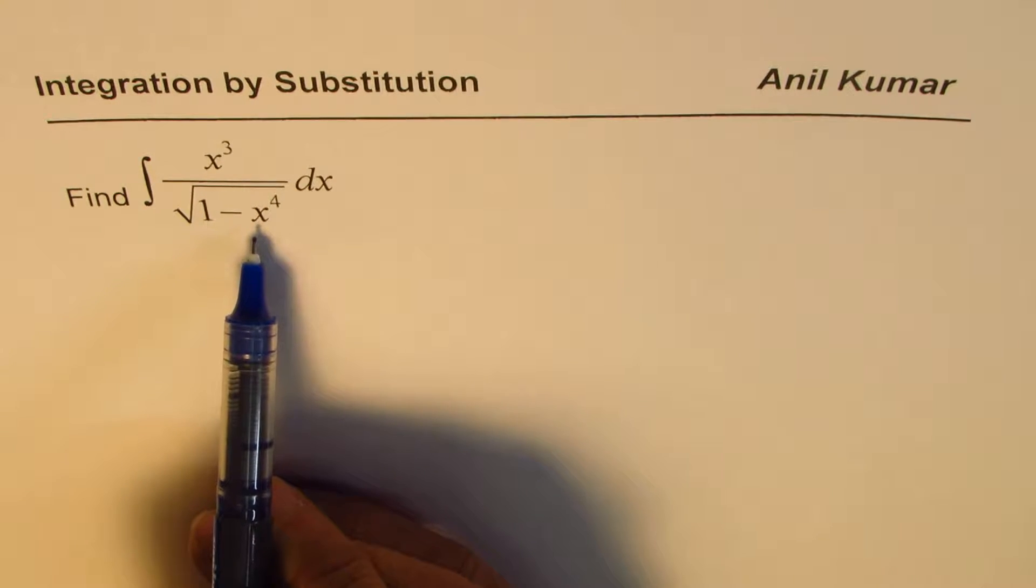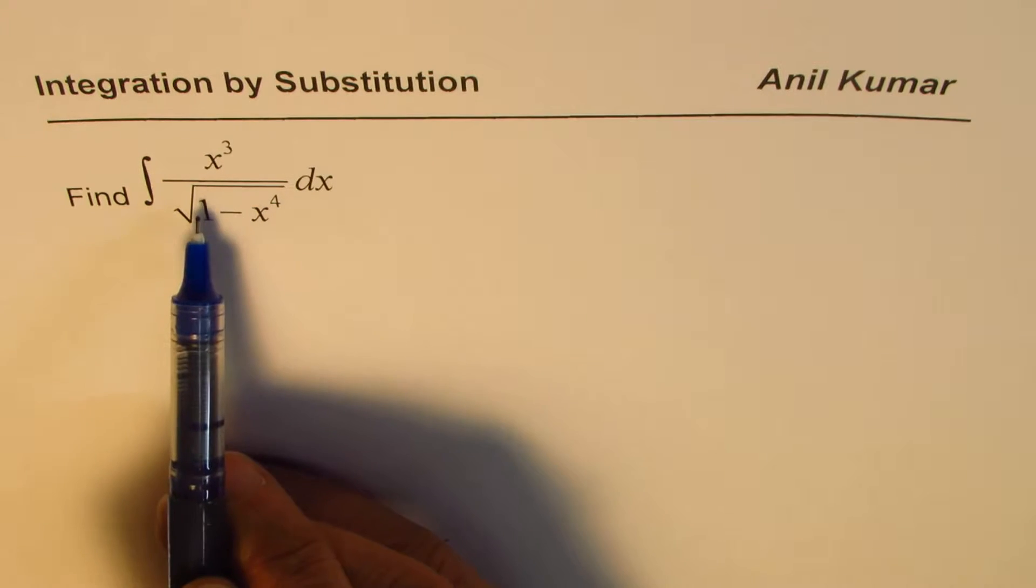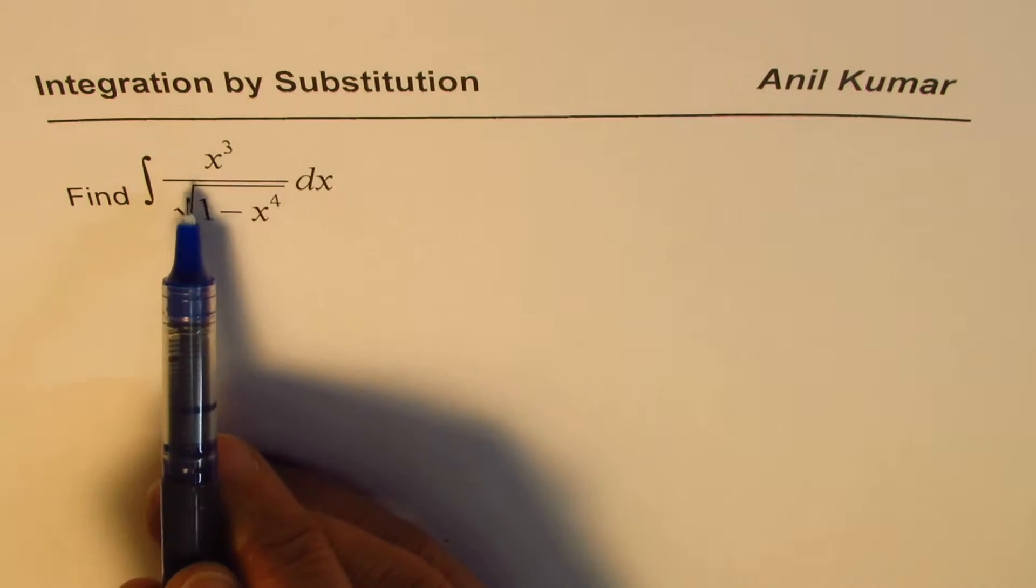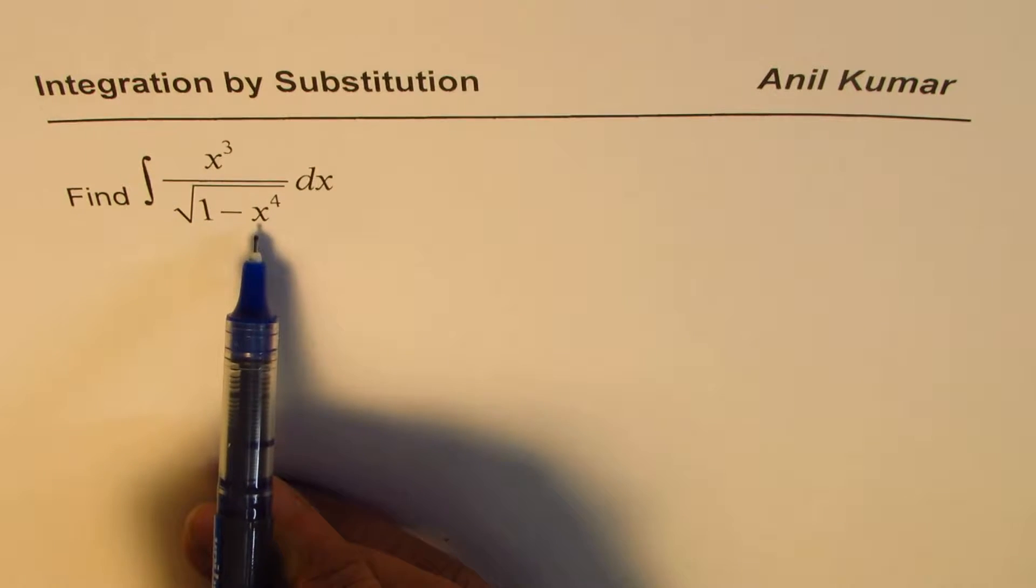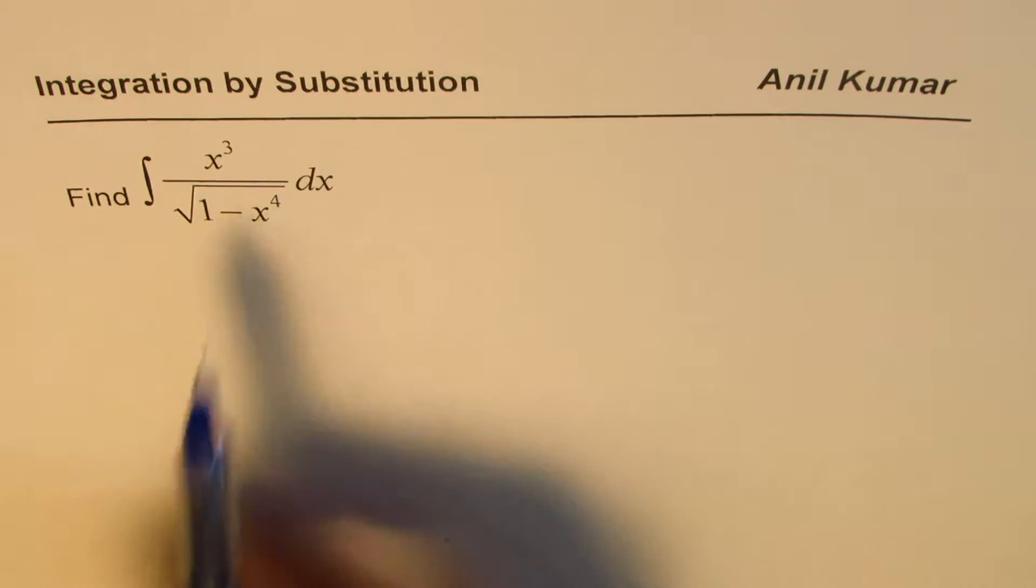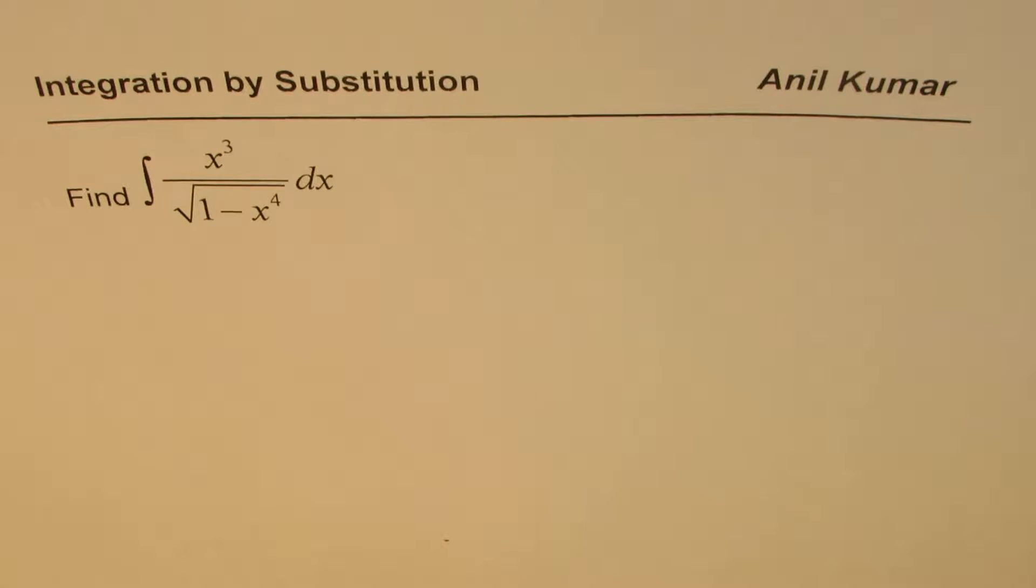You can observe that the derivative of x to the power of 4 is 4x cube, so you get at least x cube from the derivative of x to the power of 4. So that helps you to solve this question by substitution.